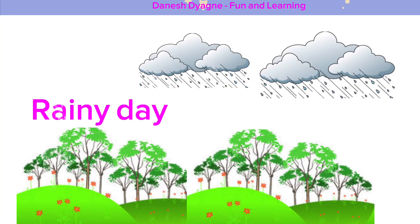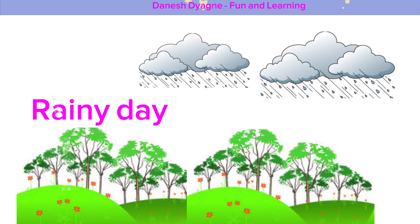Rainy Day. On a rainy day, there are a lot of dark clouds in the sky. These clouds drop a lot of water — we call it rain. Rainy Day.